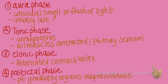There are four phases of a seizure. First, the aura phase, when the patient has a warning sign — usually an unusual smell or flash of light, lasting about a second. Second, the tonic phase, where all muscles contract and the patient may let out a silent or light scream. Third, the clonic phase — alternating contraction and relaxation — during which the patient may lose bladder control. Fourth, the post-ictal phase, when the patient gradually regains responsiveness and may feel tired or fatigued.